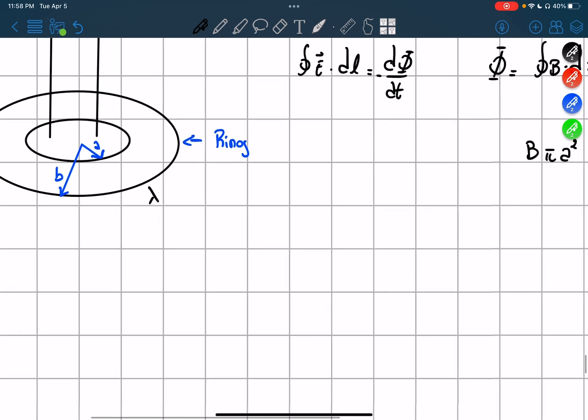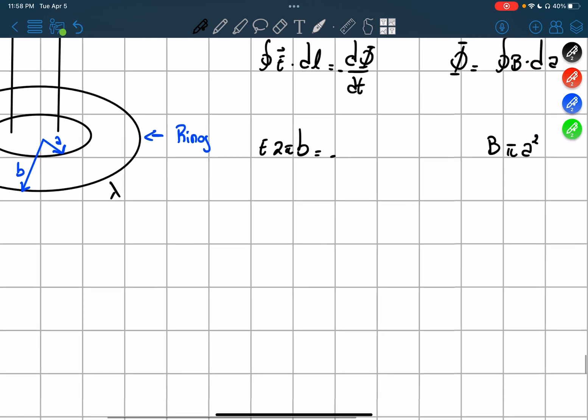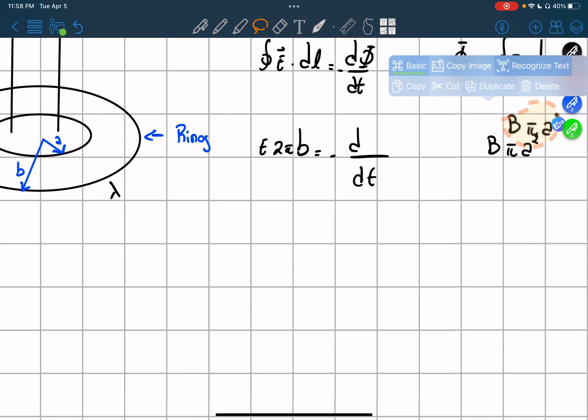And then on the outside, we're talking about the ring. So we're going to have E times 2 pi B. We're talking about the circumference of the ring. So it equals to negative and the derivative in terms of time of this part right here.